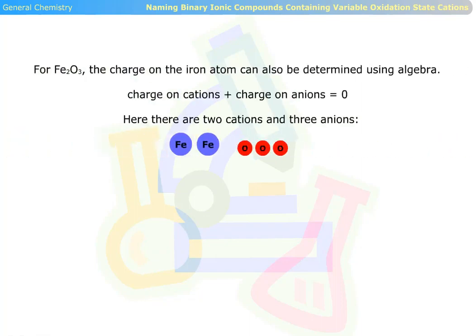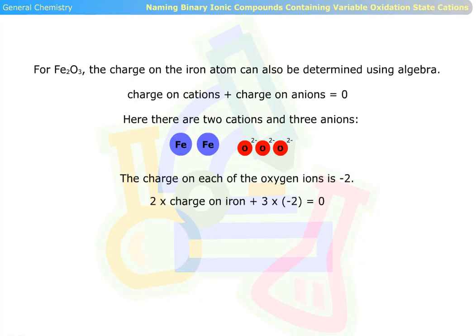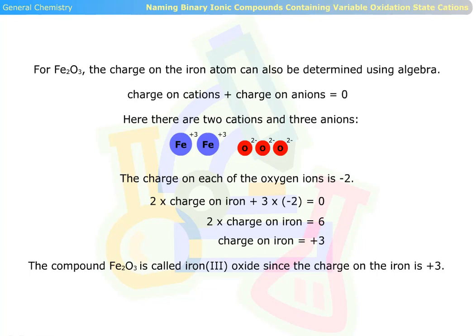For Fe2O3, the charge on the iron atom can also be determined using algebra. Charge on cations plus charge on anions equals zero. Here there are two cations and three anions. The charge on each of the oxygen ions is negative two. Two times the charge on iron plus three times negative two equals zero. So two times the charge on iron equals six. Simplifying this, the charge on iron equals positive three. The compound Fe2O3 is called iron(III) oxide since the charge on the iron is positive three.